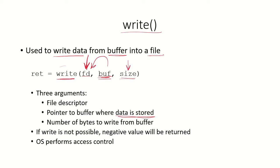If this write system call is not possible, then a negative value will be returned. For example, if the process does not have permission to write into the file, or the file has not been opened in write mode, then the write is not possible and a negative value will be returned.